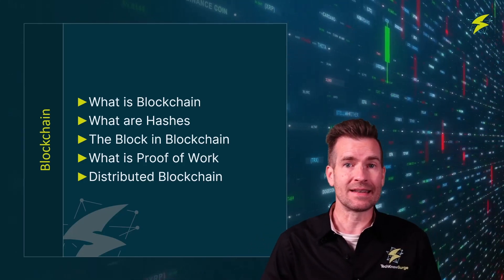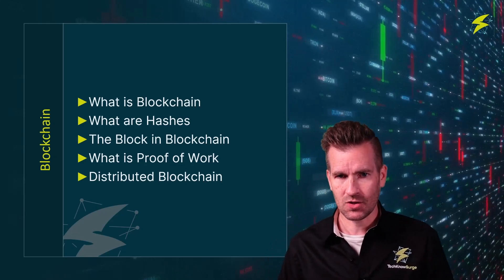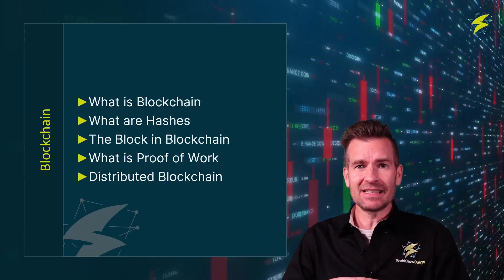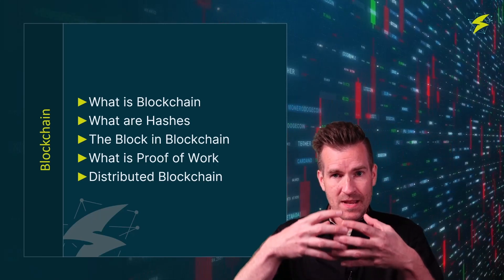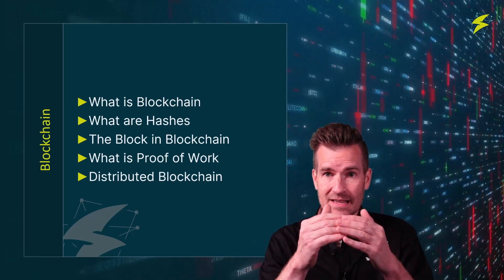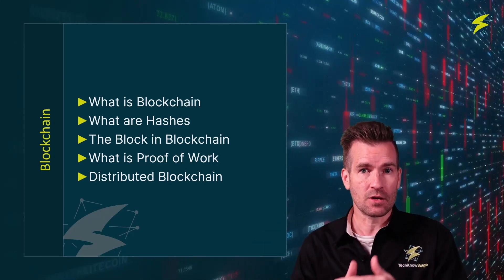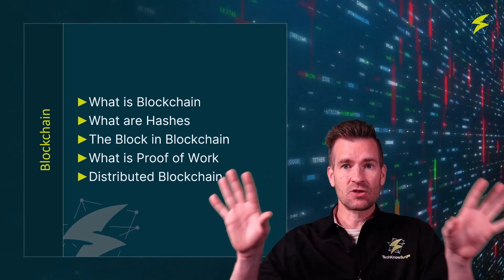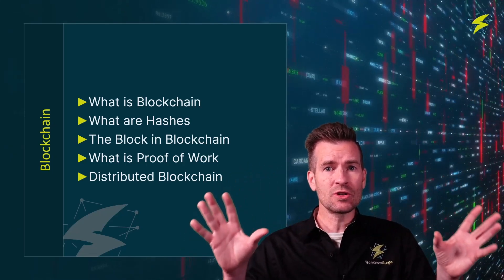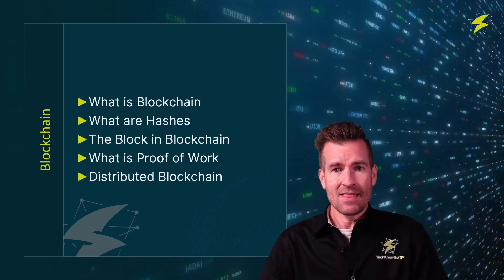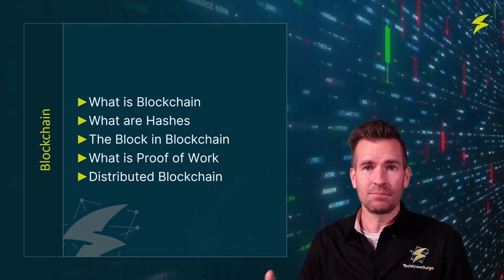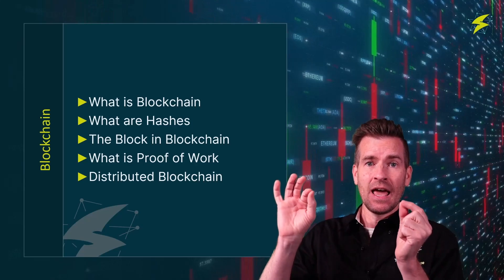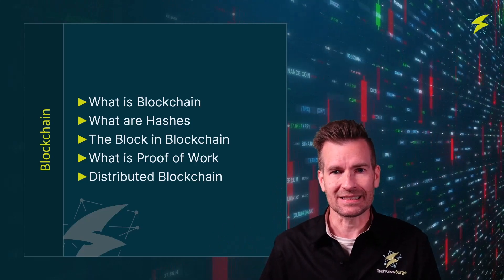Then we're going to get into distributed blockchain. One of the powers of blockchain is it allows us to not be so centralized — where there's just one record of information, one truth of information — but instead have it distributed around. We're going to talk about this distribution of blockchain and how that facilitates things like cryptocurrency.